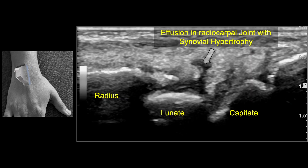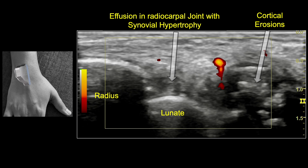The long axis image through the radiocarpal and intercarpal joints shows mild effusion with synovial hypertrophy, primarily involving the radiocarpal joint recess, with smooth cortex of the lunate and capitate. A slightly different plane shows synovial hypertrophy with cortical erosions within the distal carpal bones and mild vascularity in the synovium on power Doppler.